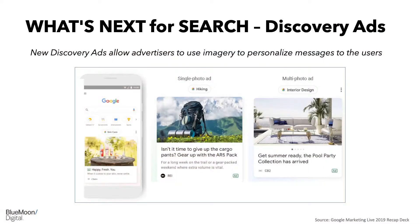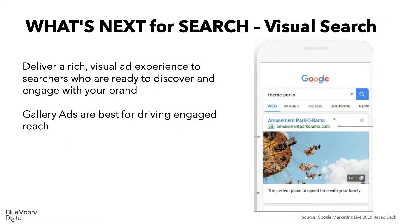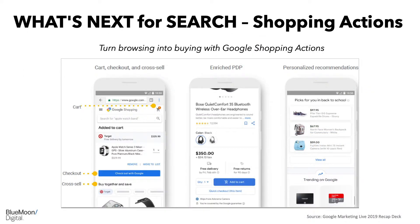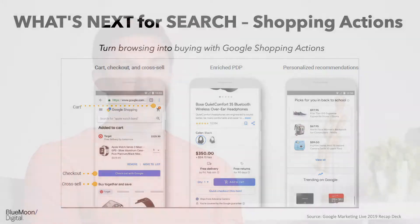Google has a couple of new features that they've recently rolled out that are changing the overall landscape of Google advertising. Discovery ads allow advertisers to use imagery to personalize messages to users — advertisers will now be able to show an image directly related to a user's search. Google is also rolling out gallery ads, which will allow a user to swipe through multiple images. Additionally, Google is adding shopping actions, which will make online shopping easier than ever by adding a one-click or buy-now feature.